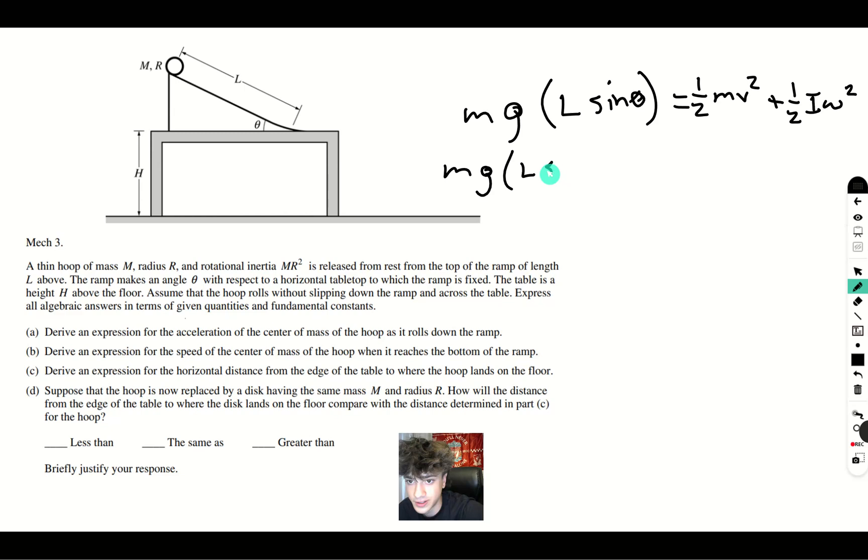M G L sine theta is equal to 1 half M V squared. The inertia is M R squared. Omega squared is V over R squared, V squared over R squared. So you get plus 1 half M V squared.